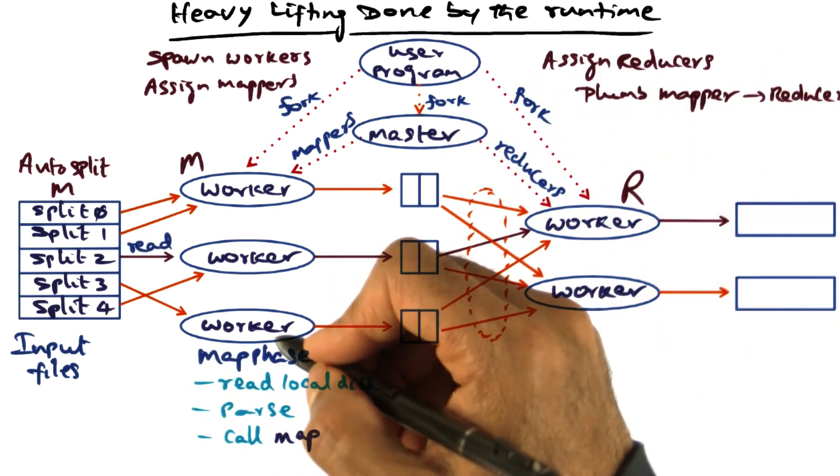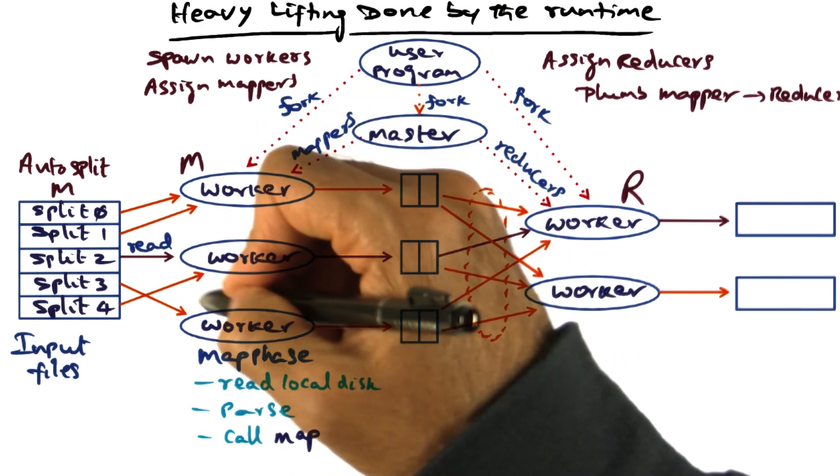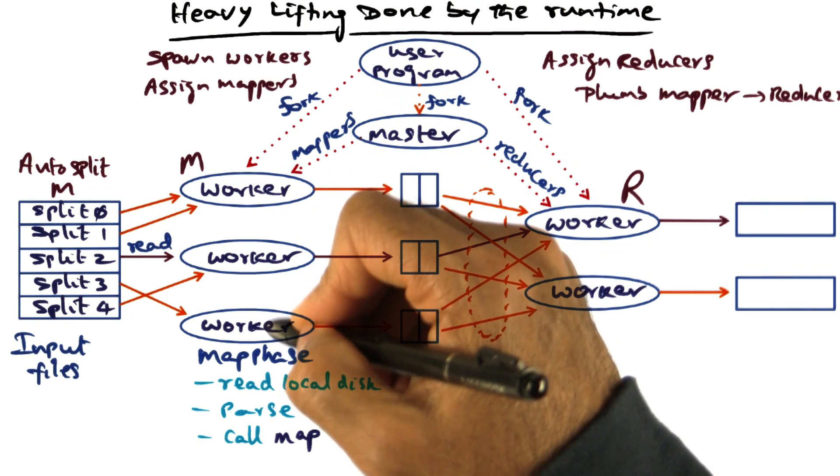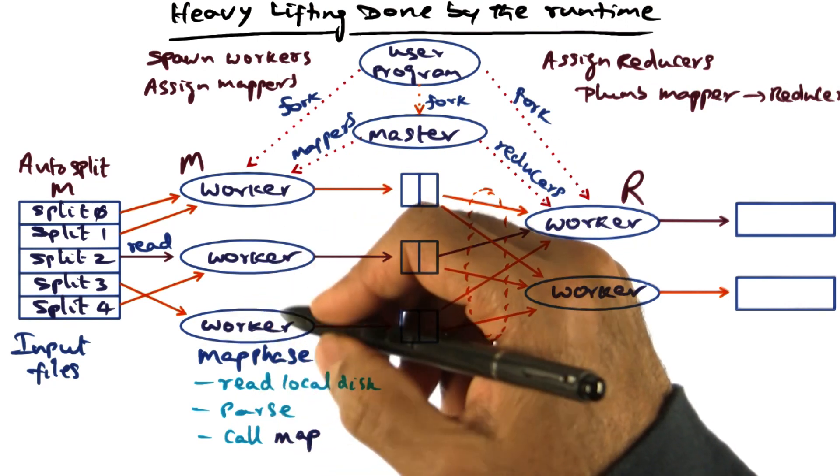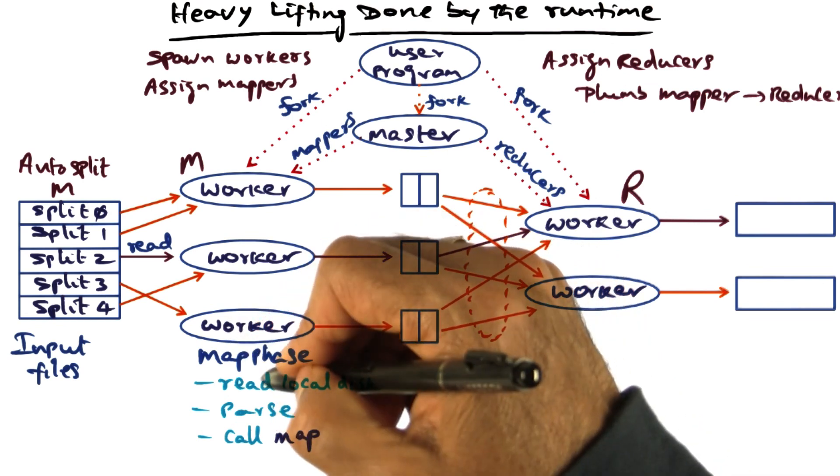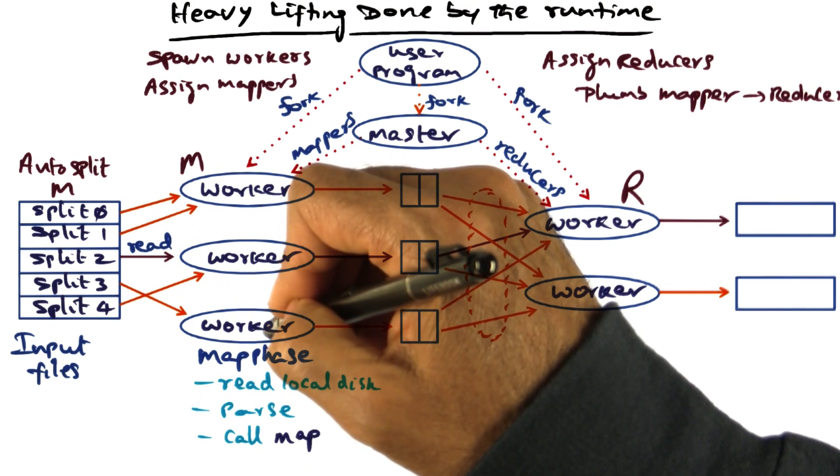Now it's time to get to work. The map phase is going to read its respective split. Each of these workers is assigned to the mapping function. Each of the workers is working on a particular split, and what they're going to do is read from the local disk the split that they've been assigned.